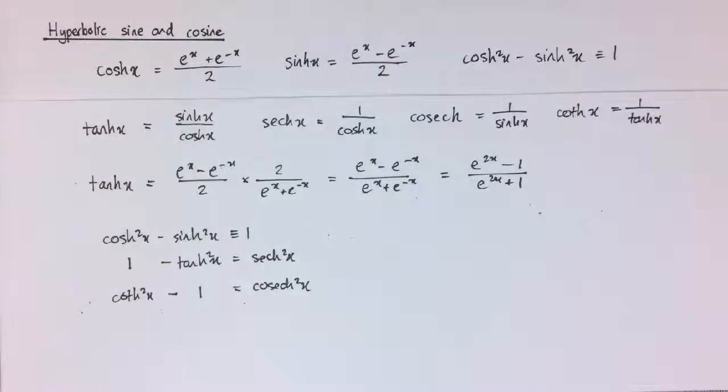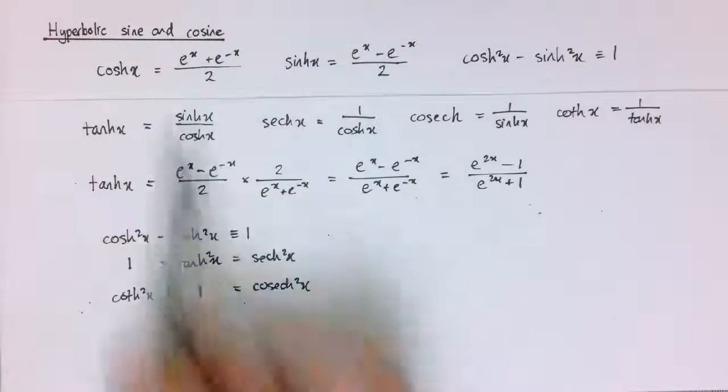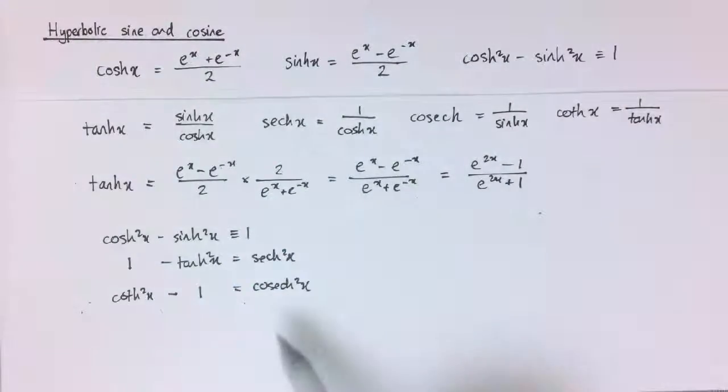So we'll think about that a bit more later on. But for now, we'd just be happy that we've got some identities, and we can prove them either from these exponential forms directly, or perhaps using some of the other definitions we've got.